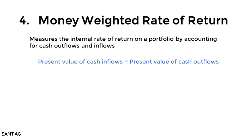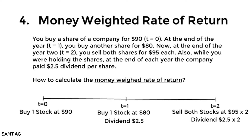Number 4: the money-weighted rate of return. It measures the internal rate of return of a portfolio by accounting for cash outflows and inflows. Simply put, it is the discount rate at which the net present value (NPV) equals 0, or the present value of inflows equals the present value of outflows. What you invest at the beginning and any subsequent cash deposits are cash inflows, while cash withdrawals, interest, dividends, and ending value are treated as cash outflows. This is from the perspective of the portfolio manager — money received from the client is an inflow, and proceeds given back to the client are an outflow.